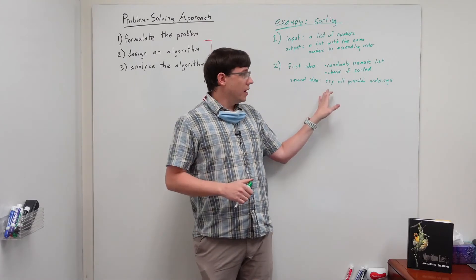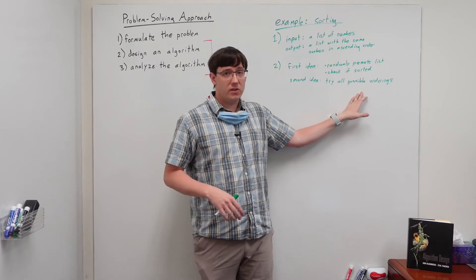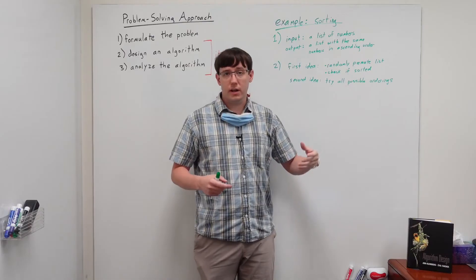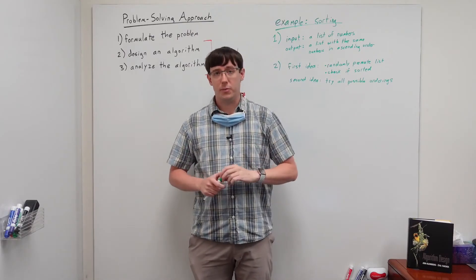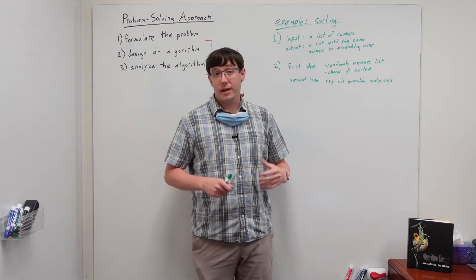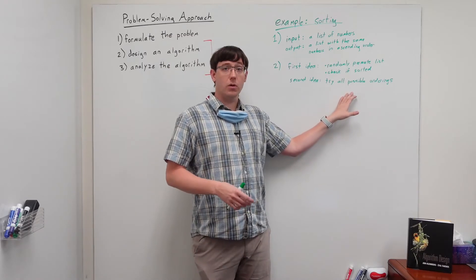And if we think about the number of possible orderings, if there are n elements in the list, then we have n options for the first element, times n-1 options for the second, times n-2 options for the third. And so, there are n factorial different possible orderings.